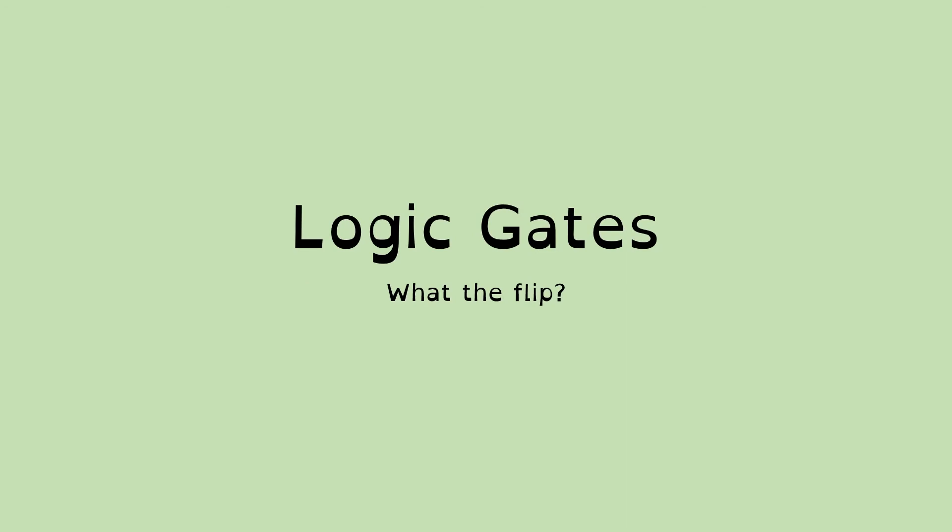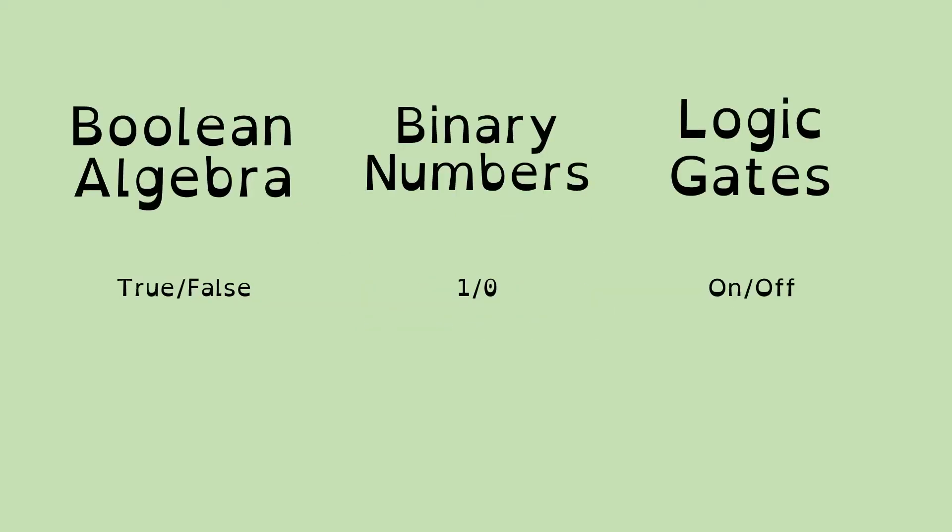So what are logic gates and how do they relate to these two concepts? Well, logic gates are electronics which use the ideas of off and on. And this is called digital electronics. So we've got these three things together: Boolean algebra, which gives us true or false; binary numbers, which uses 1 and 0; and logic gates, which use on and off. And in fact, we can see there's a kind of equivalence between these three concepts.